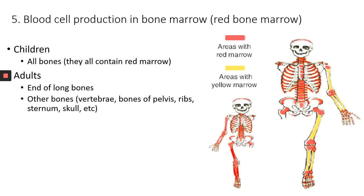But as a child grows up, eventually the red bone marrow in the medullary cavity of long bones is going to be replaced by yellow marrow. Long bones still have red marrow, but only at the ends of long bones. The red marrow is found in the spongy bone at the ends of long bones.